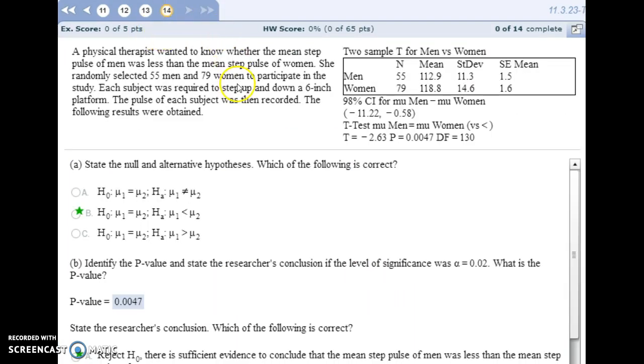For number 14, comparing two means from independent samples, we're comparing the pulse of men to the pulse of women, and our null hypothesis is that their pulses would be equal, their average pulse. Our alternative is that the men's pulse will be less than the average women's pulse. And notice your table of data here, and also the calculations that are listed below it. So identify the p-value, and the p-value is listed here. It's 0.0047. And so look at what your alpha is, and in my example here, it's 0.02. Since our p-value is less than alpha, we're going to reject the null hypothesis.